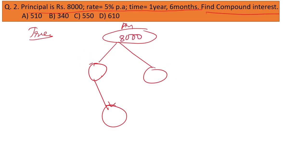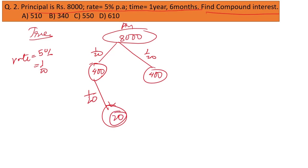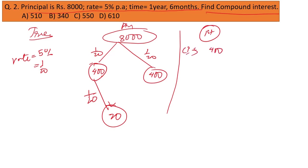Our principal is 8,000 and rate is 5%, which equals 1/20. One-twentieth of 8,000 is 400. So the first year's interest is 400. Then again, 1/20 of 400 gives the compound interest on the interest, which is 20.